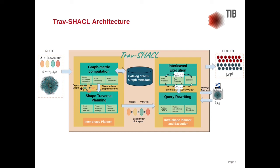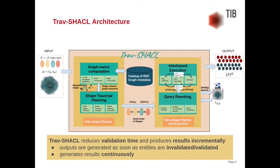In our example, 8 of 1000 universities are valid. This knowledge is exploited when executing the target query of the professors by including the constraints for a doctoral degree from one of those valid universities. A complementary query is also sent to the endpoint to get all entities of the professor class. In doing so, Draft SHACL can immediately invalidate 1260 of the 1267 professors in the knowledge graph without checking any rule. Draft SHACL reduces the validation time and produces results incrementally — outputs are generated as soon as entities are invalidated or validated.